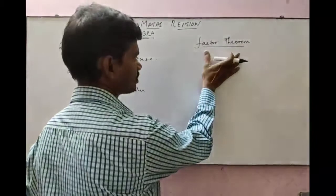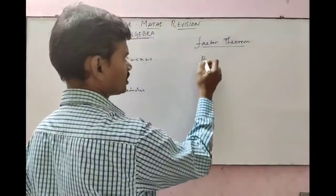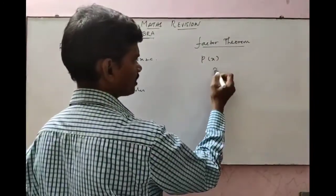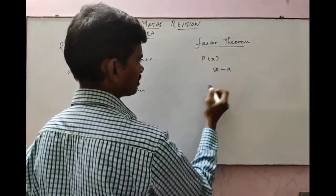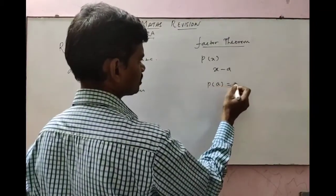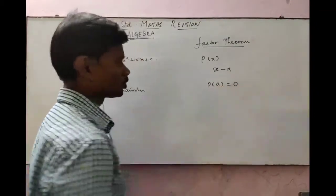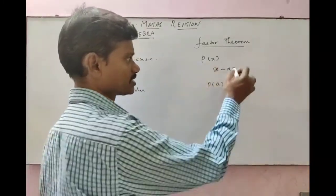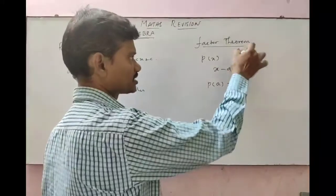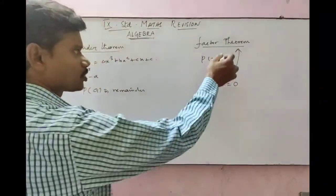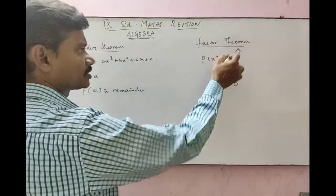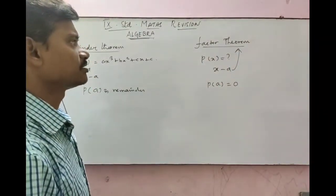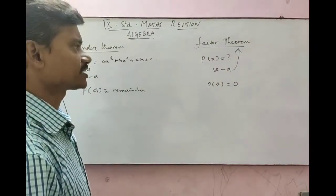The factor theorem is the advanced form of the remainder theorem. If you divide P of x by x minus a and the remainder P of a equals 0, then x minus a is a factor of that polynomial. This is the factor theorem.